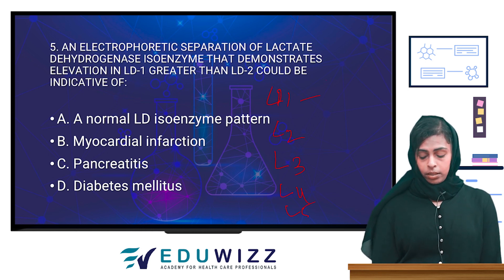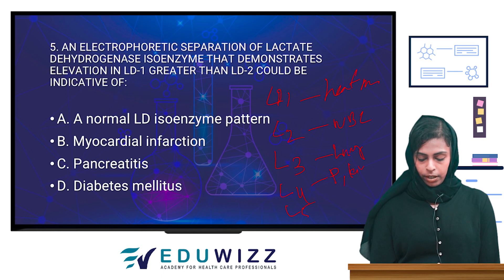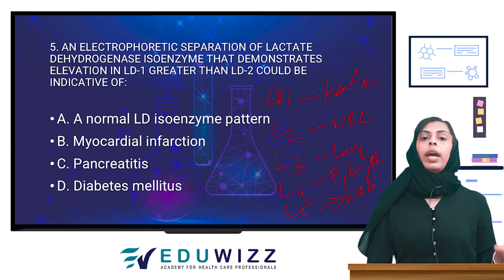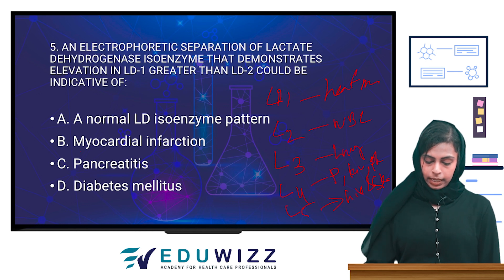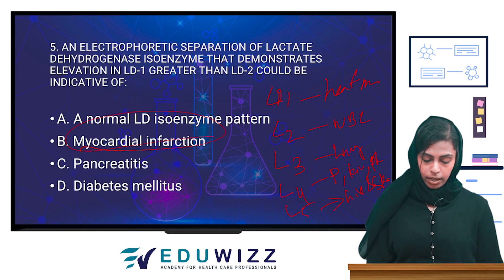LD2 is associated with WBCs, LD3 with lungs, LD4 with pancreas, kidney, and platelets, and LD5 is seen in liver and skeletal muscles. So when LD1 is increased, the condition is myocardial infarction. LD4 increased would indicate pancreatitis. Therefore, the answer is myocardial infarction.